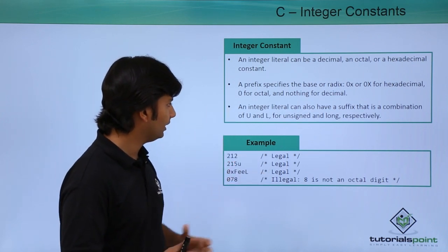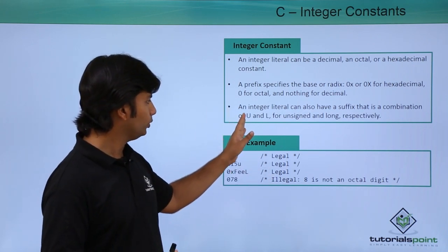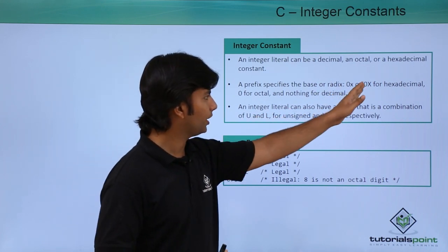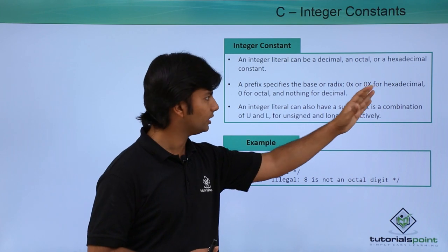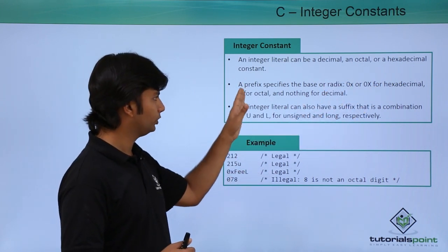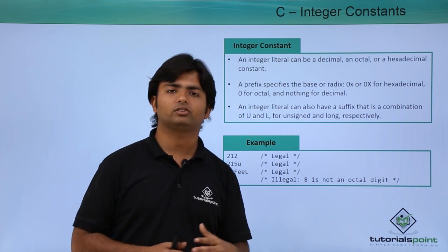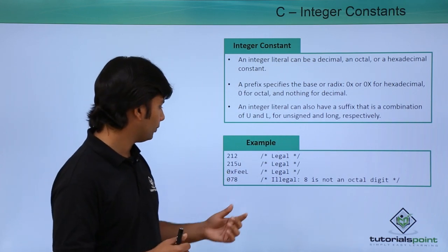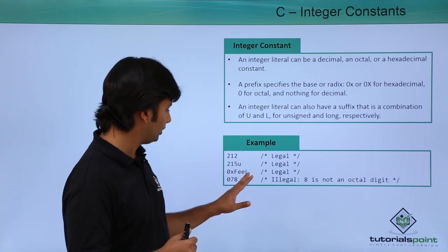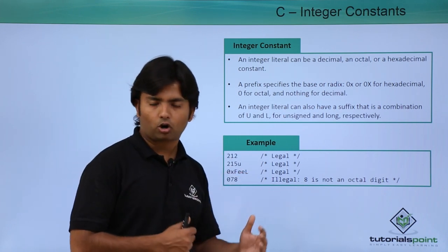Whenever you will write literal integer values, you can do them like that. For example, U is for unsigned, L is for long, and similarly 0x—either small x or capital X—is for hexadecimal. If you start the value from 0 only, then that is the octal value.